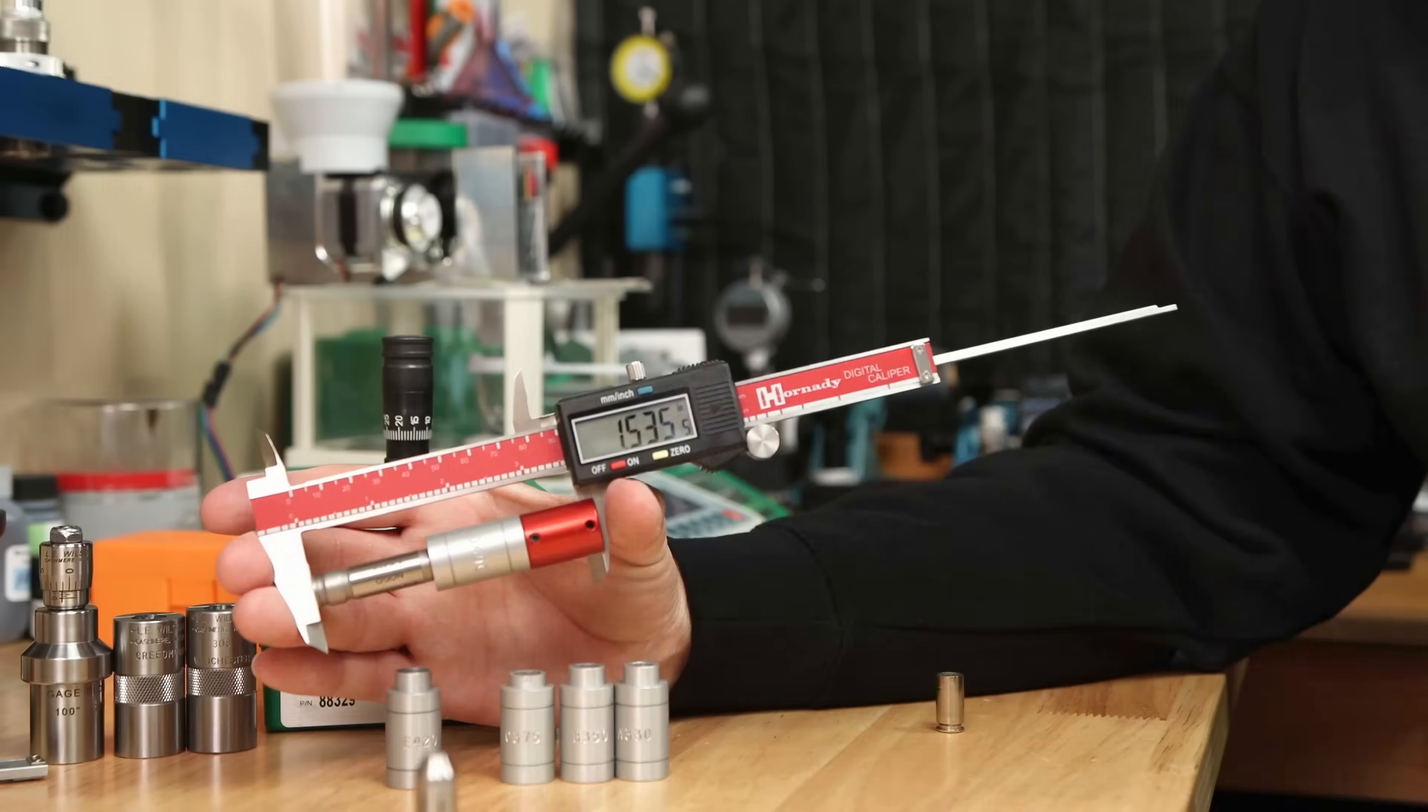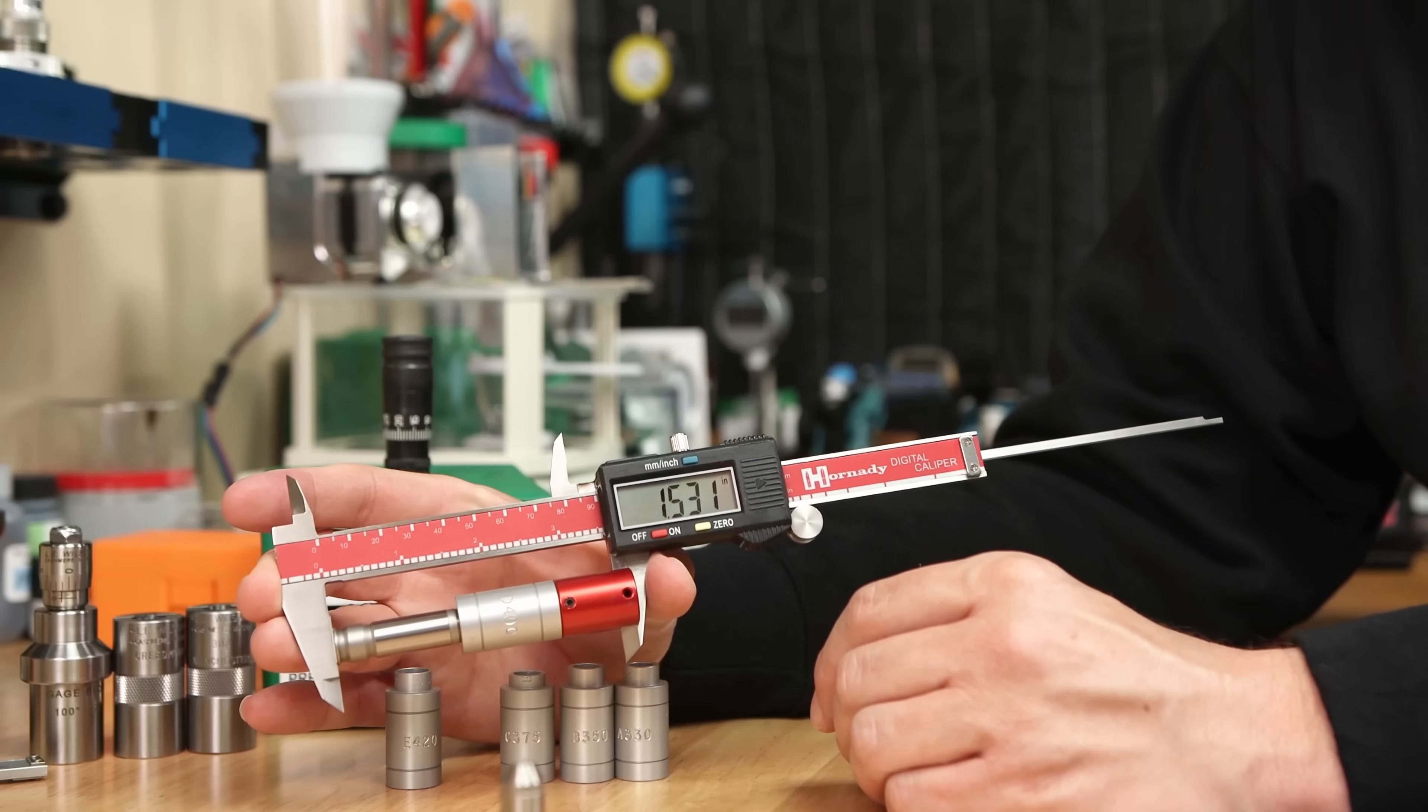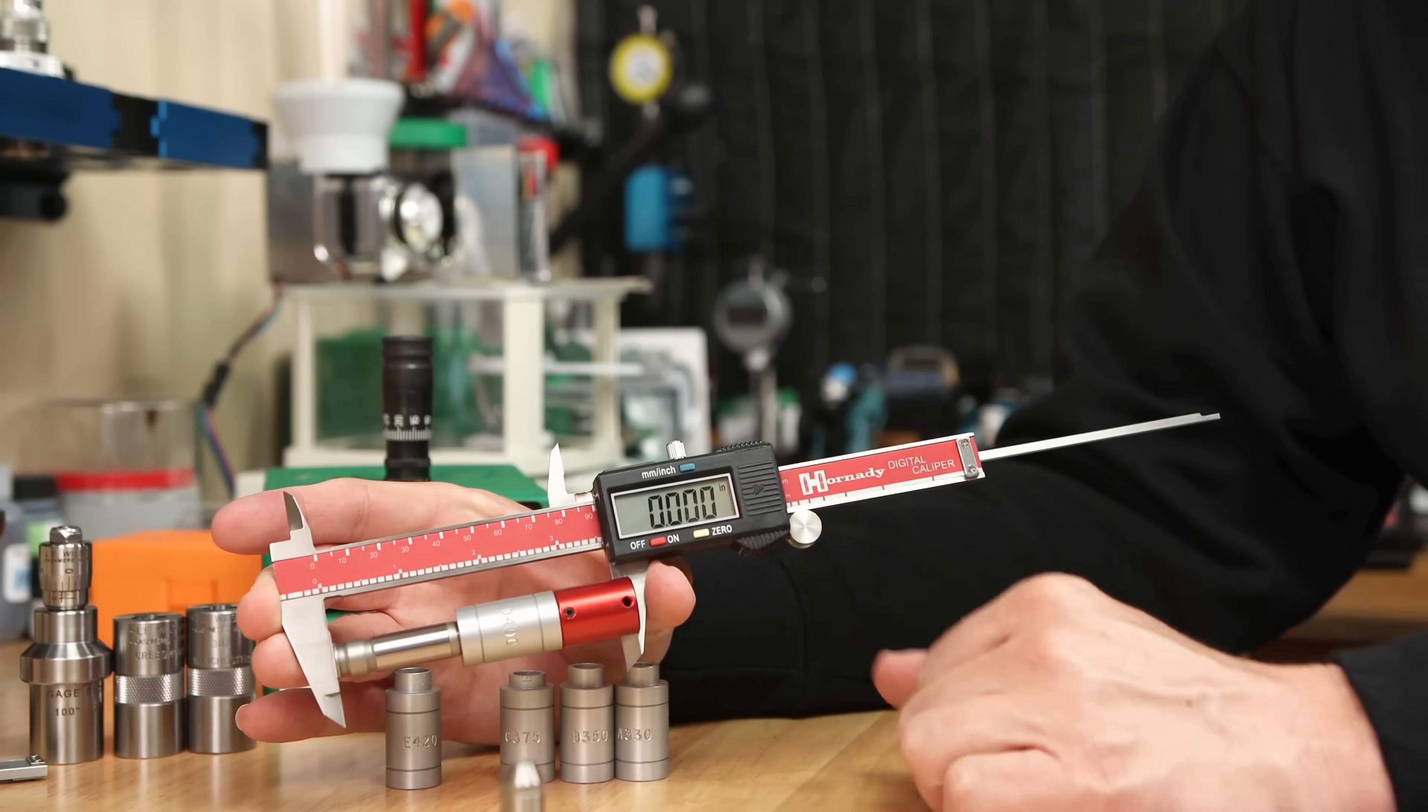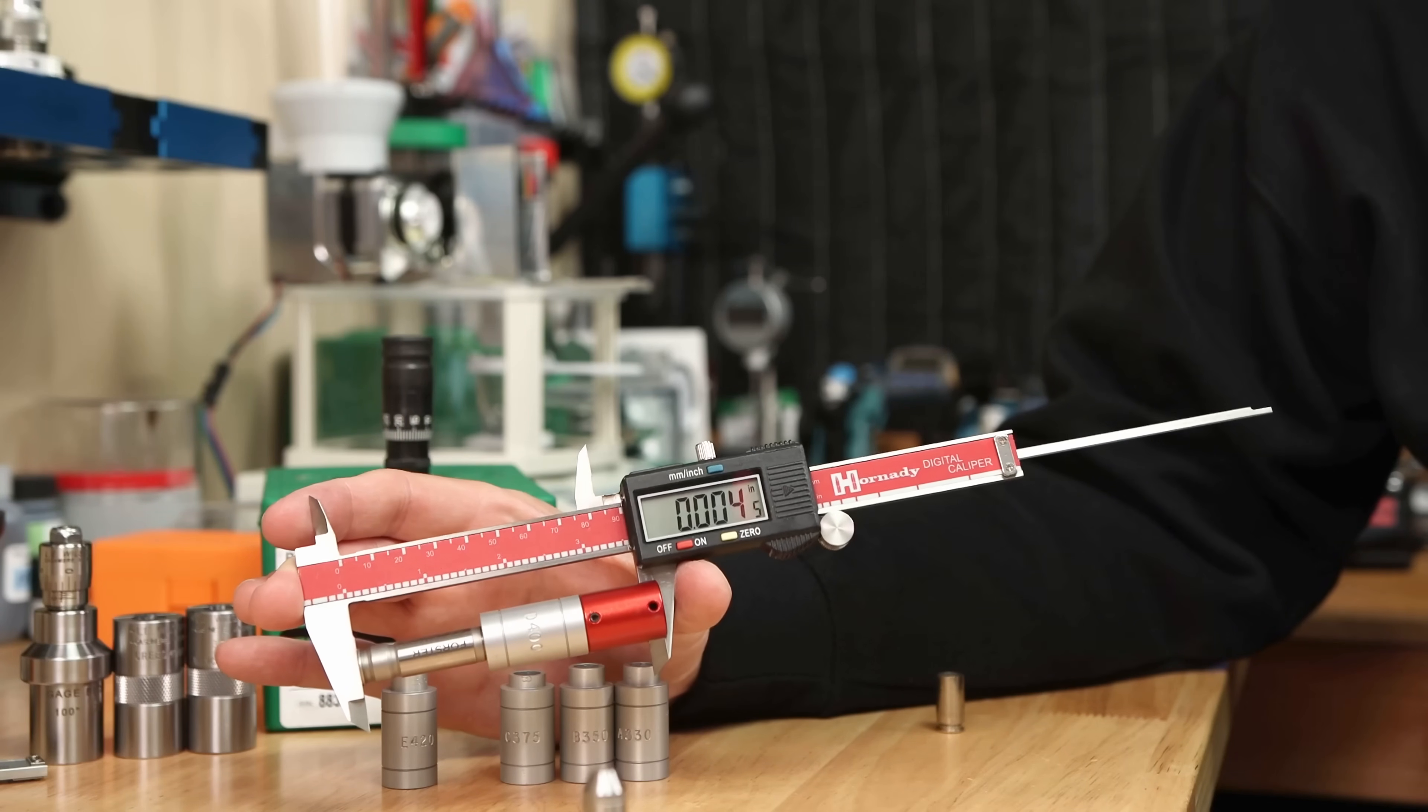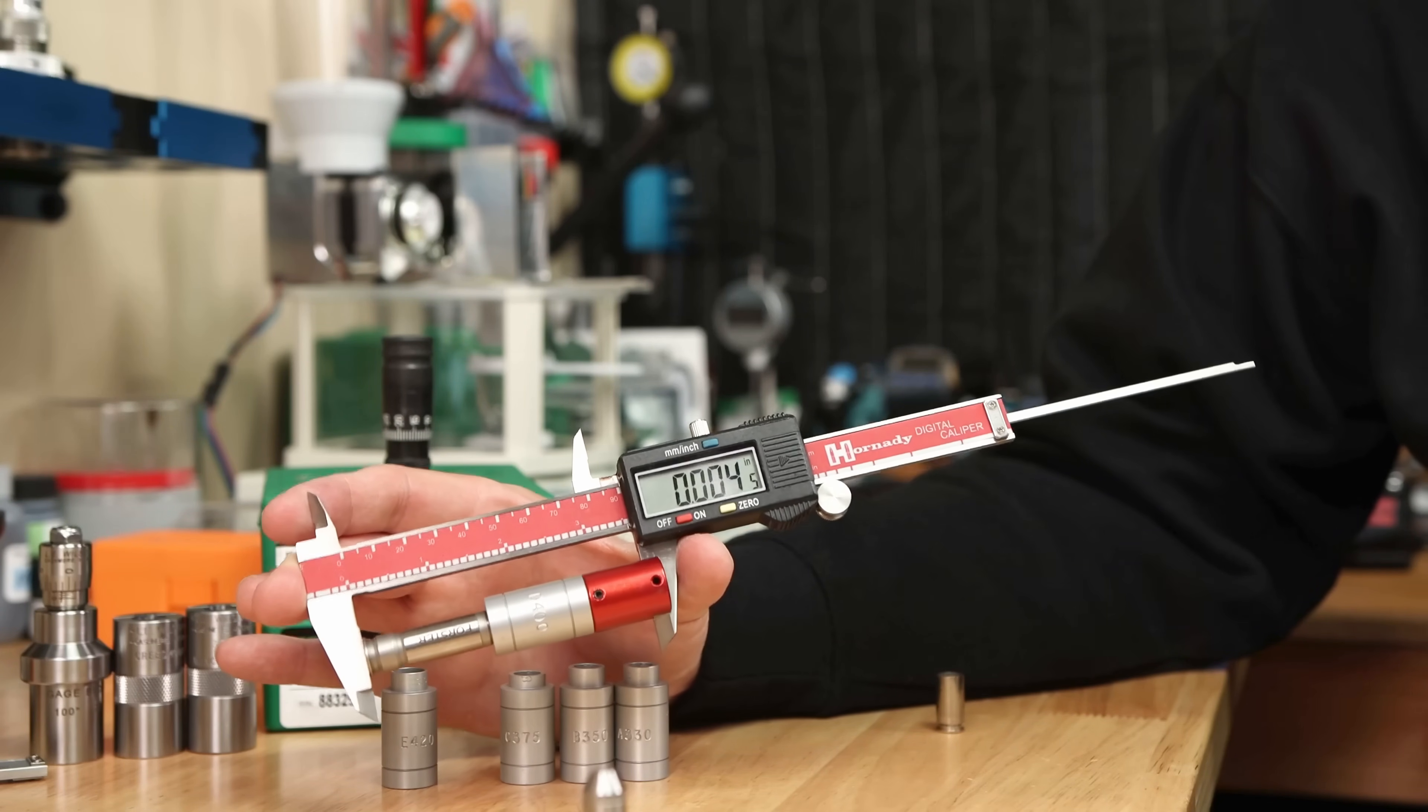But the real question is can we see the difference? What you would typically do is take our go gauge, zero it, and then see our no-go gauge measures about 4.5 thousandths difference. So can we see the difference? Absolutely.